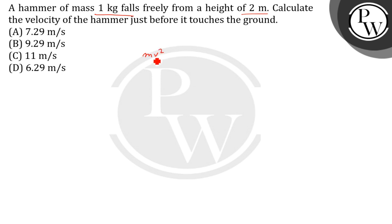What will happen? MV squared by 2 equals Mgh. So if you cancel M, we get V squared by 2 equals gh. Or we can write that V squared equals 2gh, or V equals square root of 2gh.